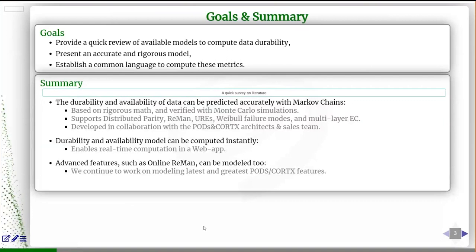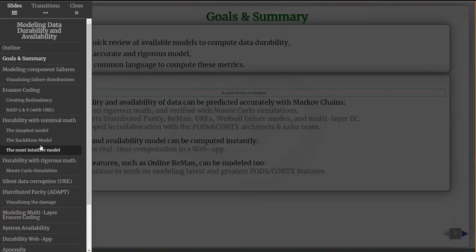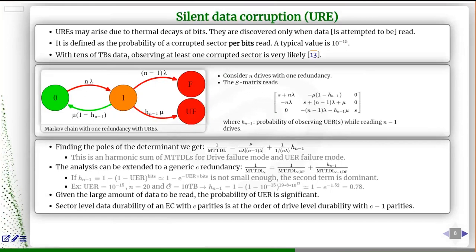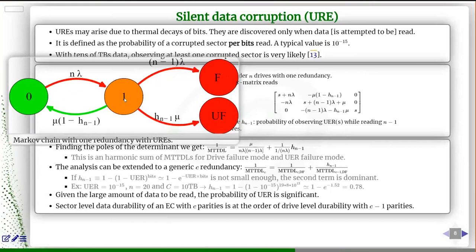Q: Can you go back to the slide about bad blocks affecting recovery? Did you say that hitting a bad block during recovery means we cannot recover? A: Yes, if you are in critical mode — meaning you've already lost all c redundancies and are trying to recover — then you need every single bit from all healthy drives. If you hit a URE, you lose that sector because there is no parity left. Critical mode means you lost all the drives you can support and are actively reconstructing.